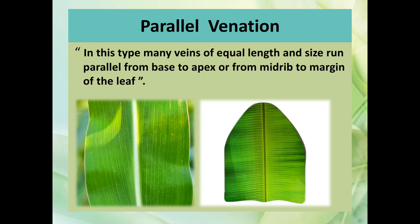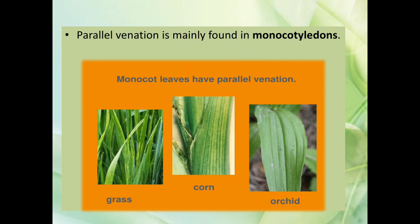Parallel venation: in this type, many veins of equal length and size run parallel from the base to the apex, and from the midrib to the margin of the leaf. You can observe in the diagram that they are arranged in a parallel manner. Parallel venation is mainly found in monocotyledon plants, for example the leaf of grass, corn, and orchid.